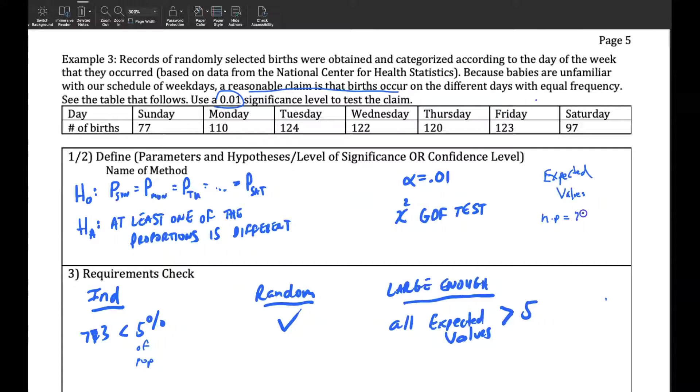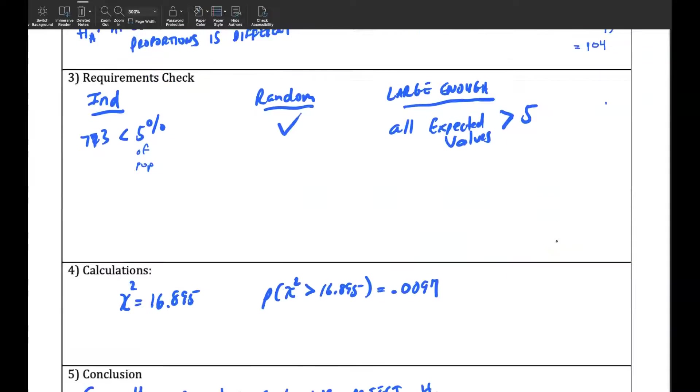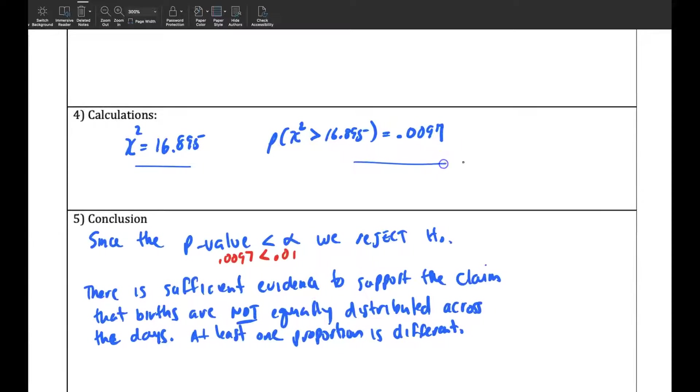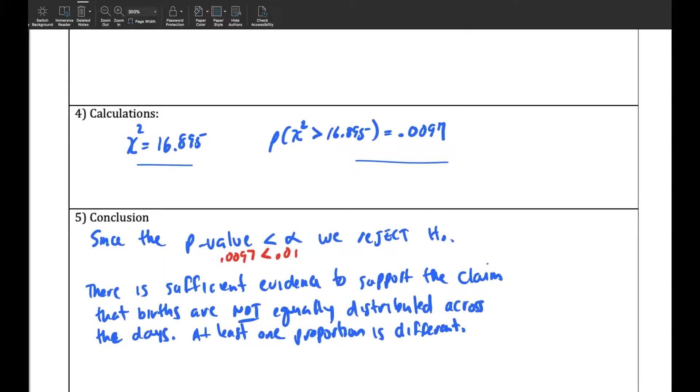In this case, it's 773 times the fraction p, again, is the proportion that we think if it was equal, so that would be 1 out of 7. And so our expected value is 104, in this case, right here. That's our expected value there. And so that's greater than 5.